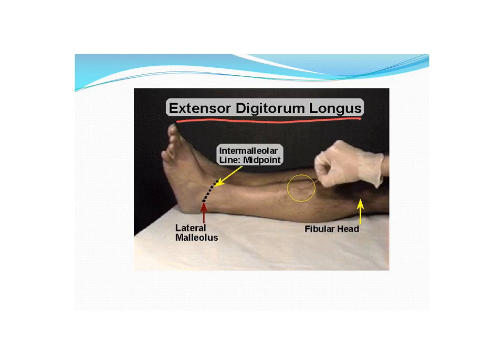This image is showing you a fine wire electrode going into the extensor digitorum longus. You can see, if you look at the gloved hand, that fine needle going straight in towards the extensor digitorum longus.